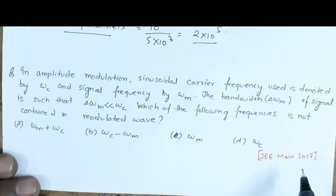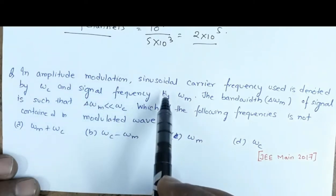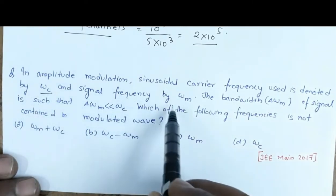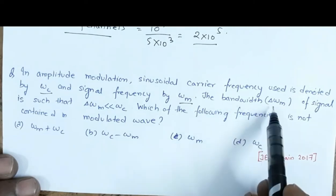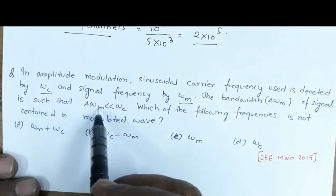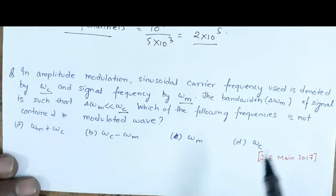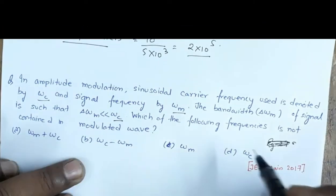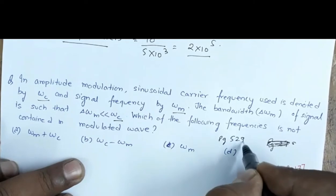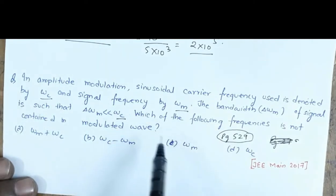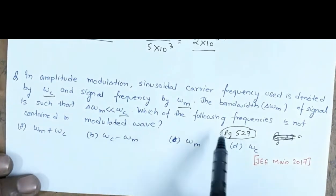The next question is from JEE 2017. In amplitude modulation, the sinusoidal carrier frequency is denoted by ωc and the signal frequency is denoted by ωm. The bandwidth Δωm of the signal is such that Δωm is very much less than ωc. Which of the following frequencies is not contained in the modulated wave? This question is directly from NCERT, page number 529.